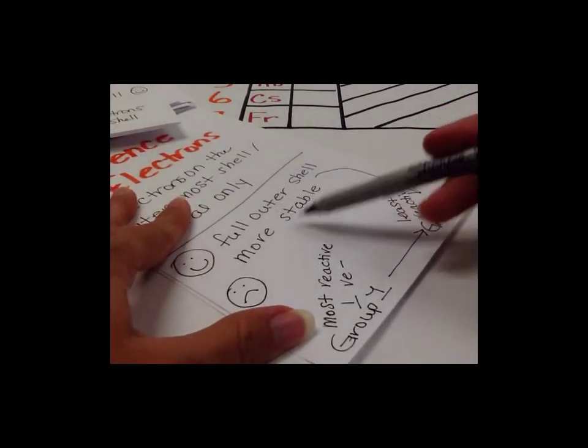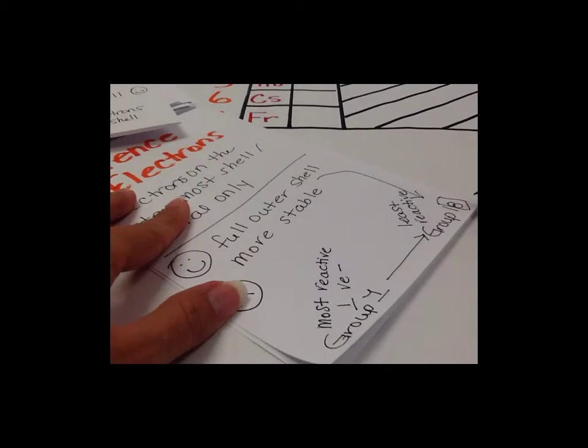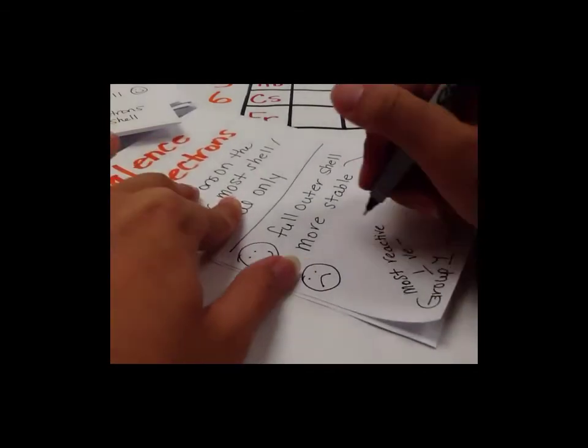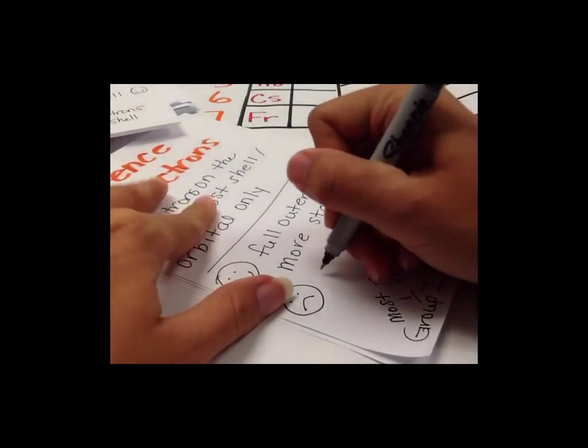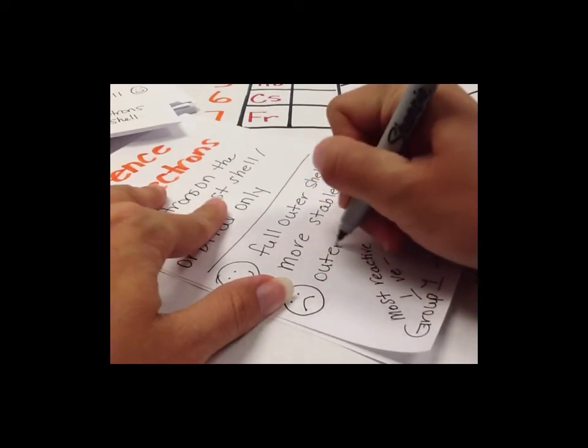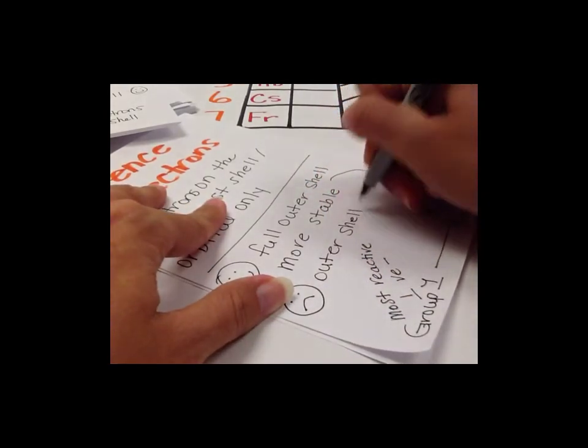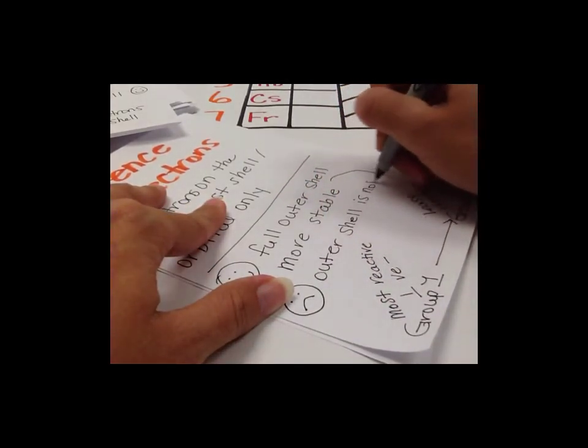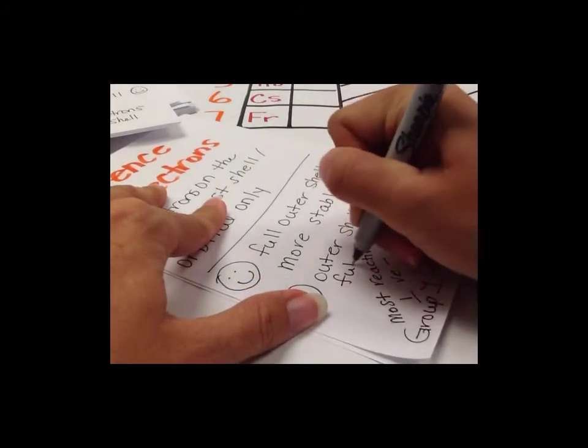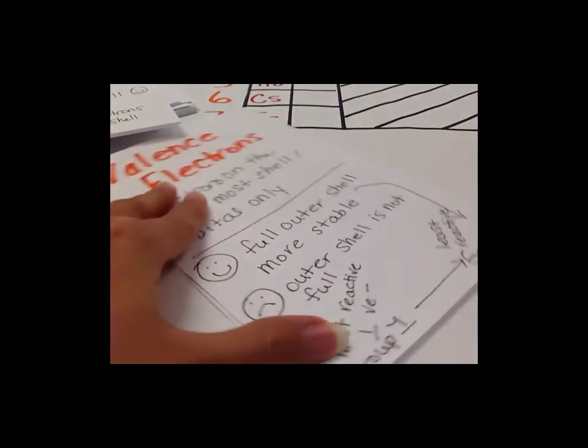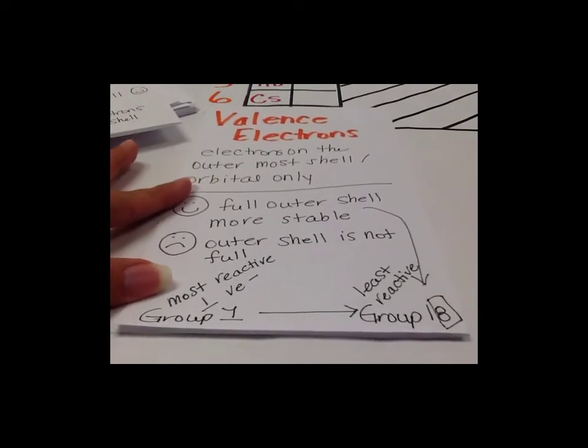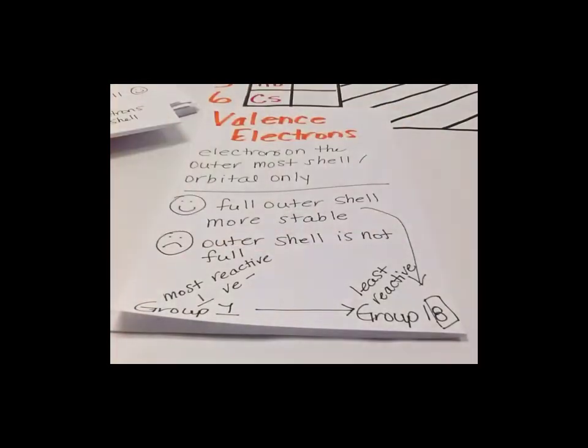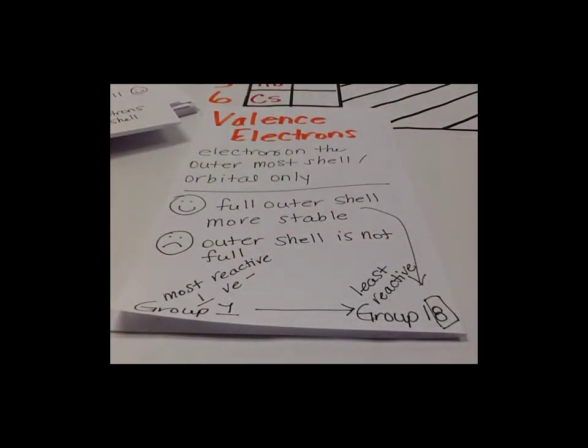So a full outer shell is more stable, and an outer shell that is not full is reactive. But depending on where on the periodic table that element is located and depending on how many of those valence electrons it has depends on its reactivity.